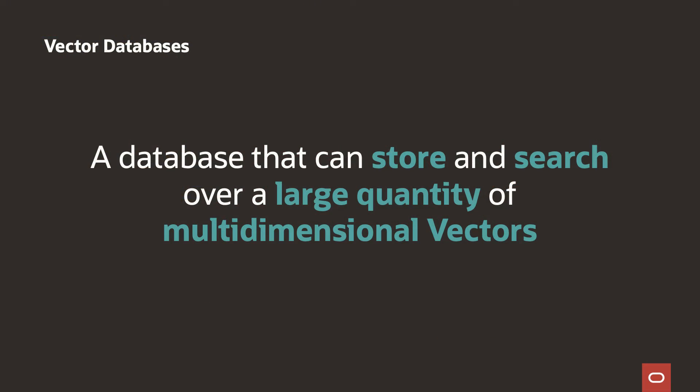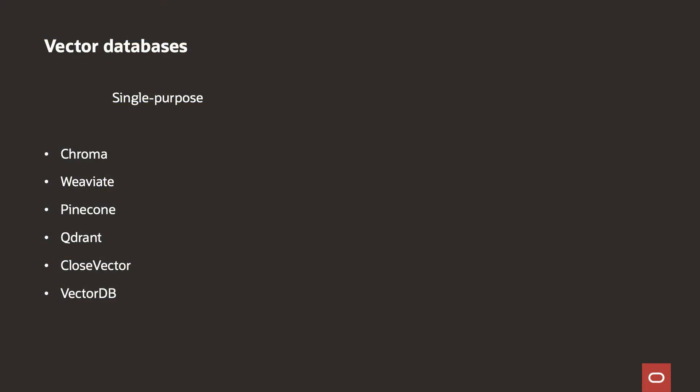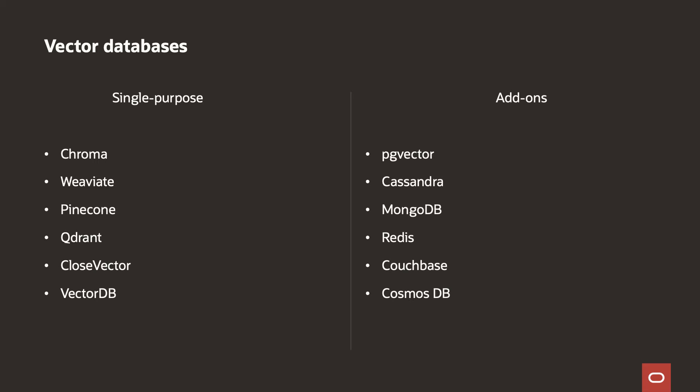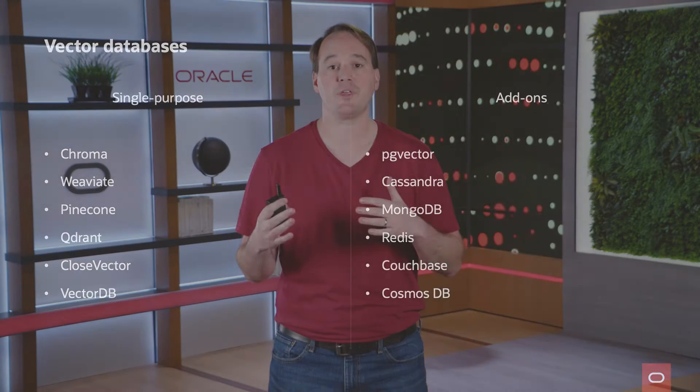That brings us to vector databases. A vector database is a database that can store, index, and run similarity search queries on high-dimensional vectors — essentially a database that allows us to store vectors and then compare them with each other. There are many single-purpose databases and add-ons to existing databases out there. But before we go there, let's take a quick look at a practical example of how we may use vectorization and similarity search in applications.